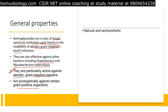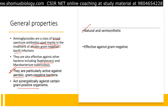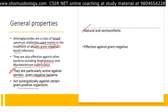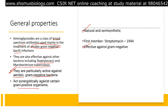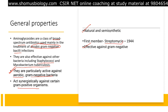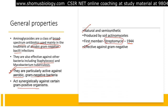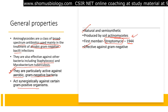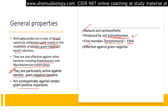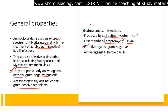Aminoglycosides can be both natural as well as semi-synthetic in nature. They are effective against gram-negative bacteria. The first member discovered was streptomycin in 1944, produced by soil actinomycetes. They are also active against tuberculosis bacilli.